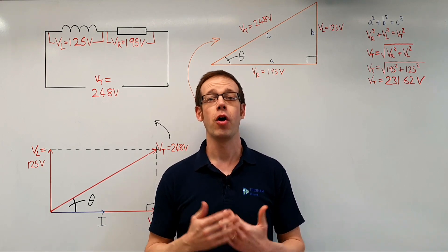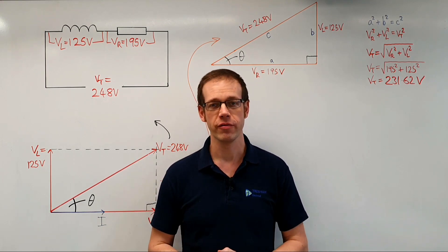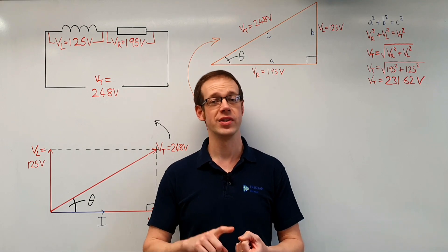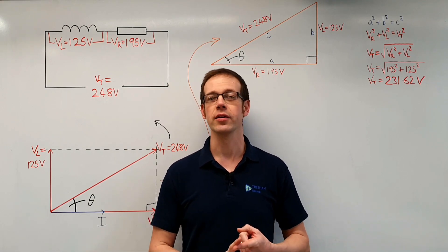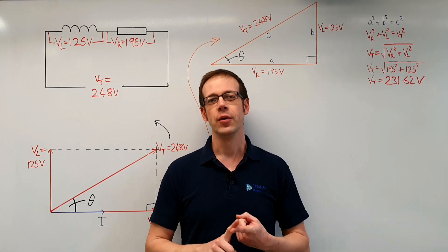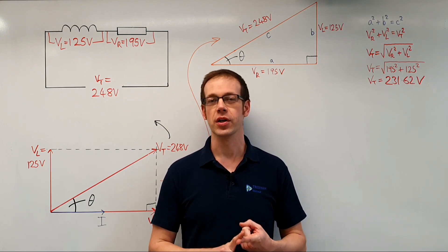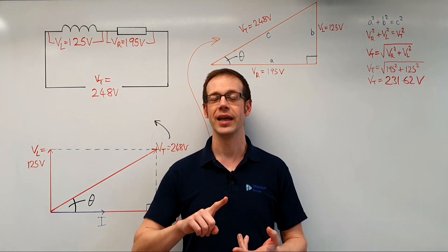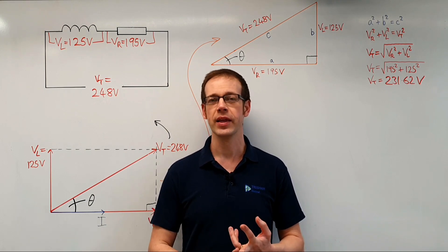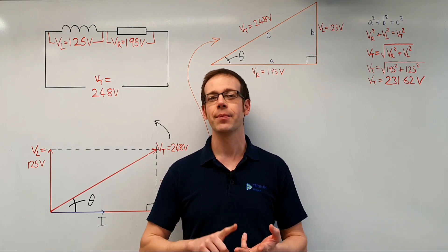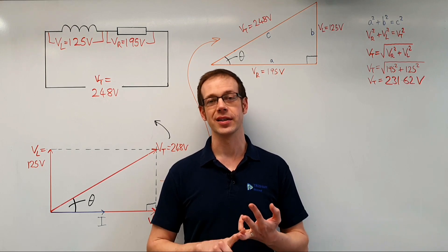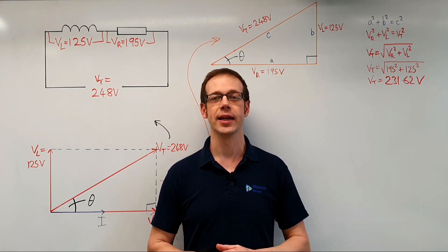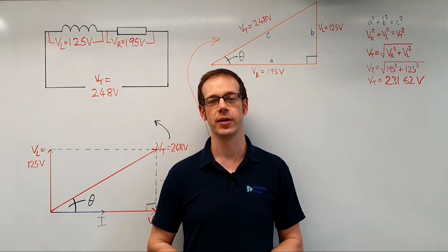We're already familiar with the idea of an opposition to current flow. We know that can come in the form of resistance in a resistive circuit. We also saw in a previous video that opposition to current flow can come from inductive reactance and capacitive reactance, which is what you get when inductors and capacitors are connected to AC supplies.